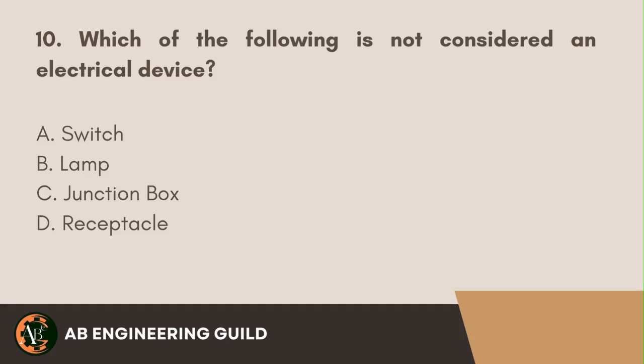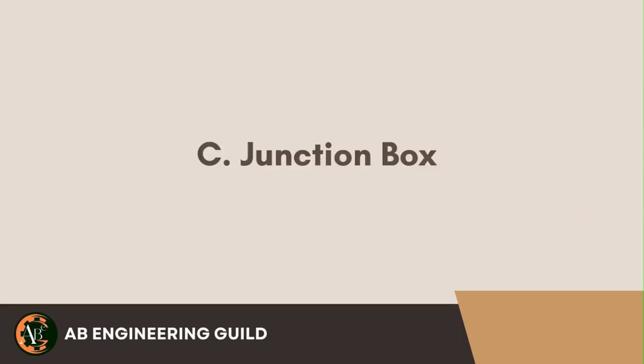Question 10. Which of the following is not considered an electrical device? A. Switch. B. Lamp. C. Junction box. D. Receptacle. Answer: C. Junction box.